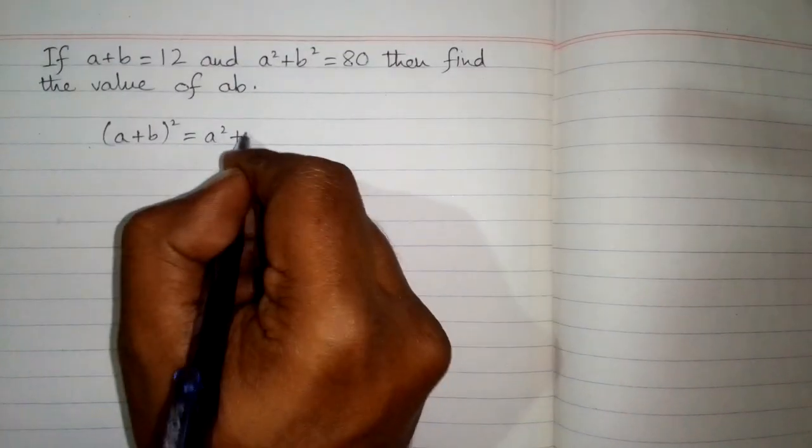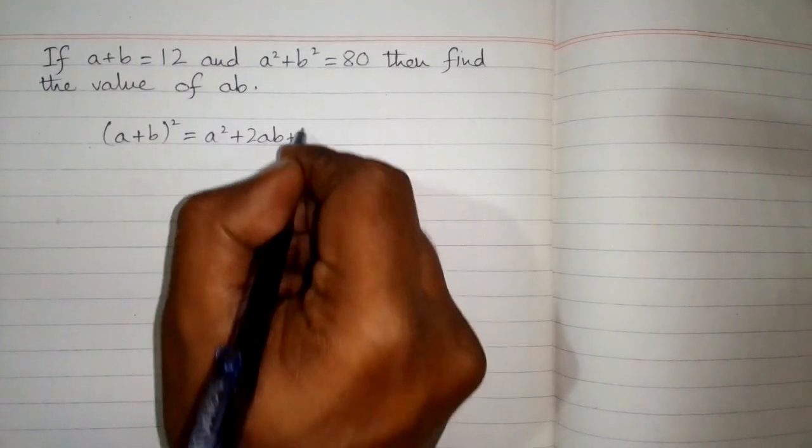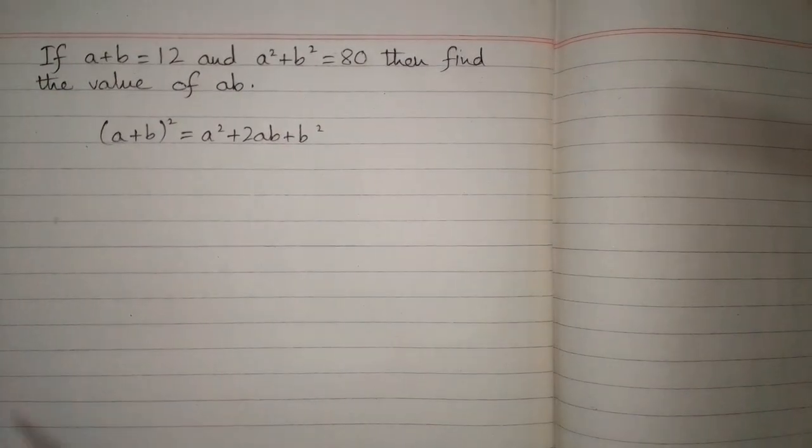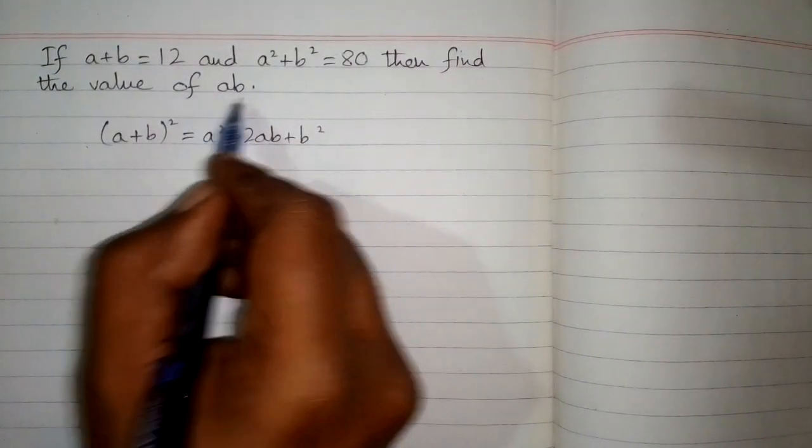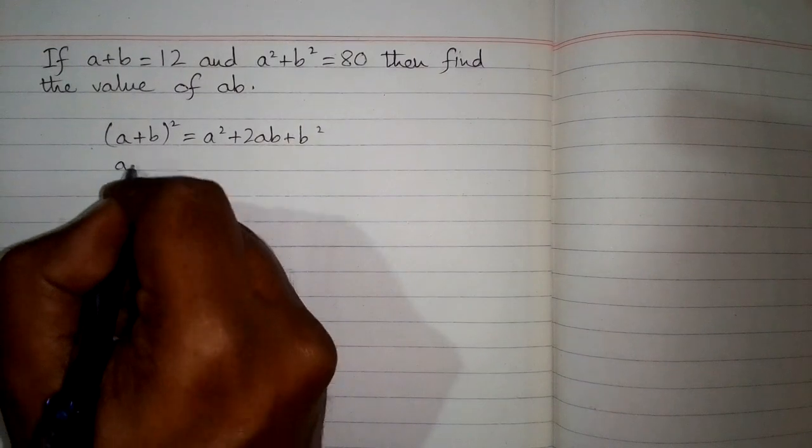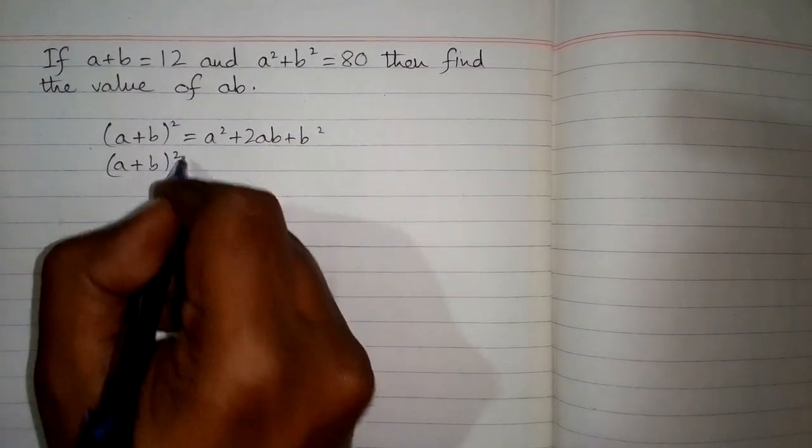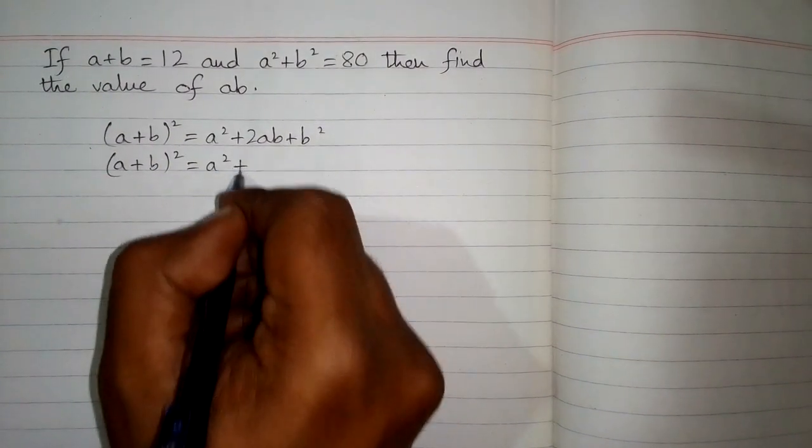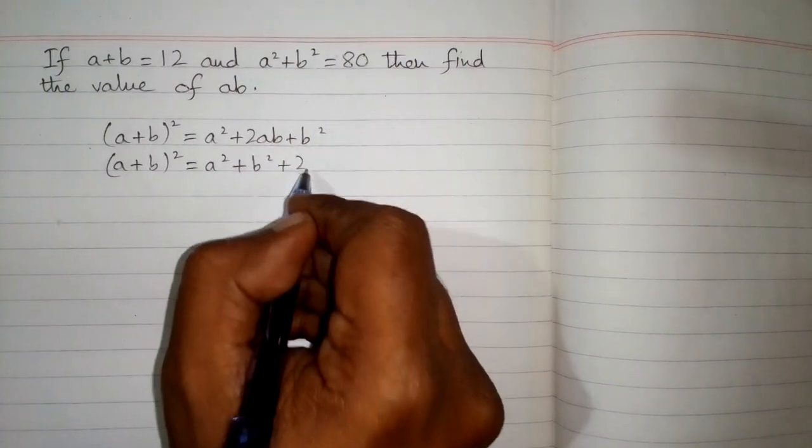a² + 2ab + b². In order to find the value of ab, this can be written as (a + b)² = a² + b² + 2ab.